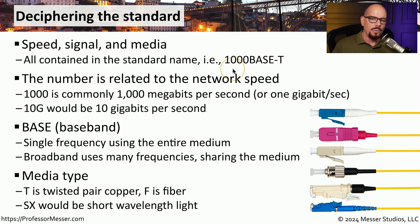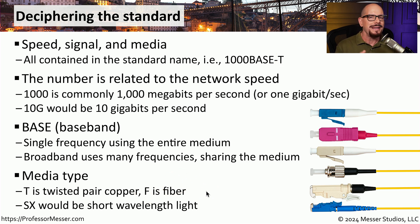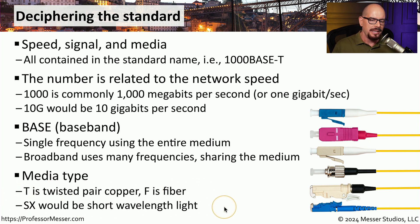For example, 1000BASE-T has a T at the end, and we can assume that T means this is twisted pair copper. If there was an F at the end, it's very possible that this particular standard would use fiber optics. There may be additional letters at the end of the standard — for example, if there is an SX at the end, it might be referring to a short wavelength light that is sent over that fiber optic connection.